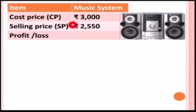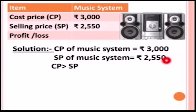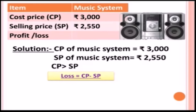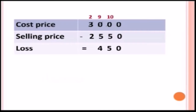Next item is a music system. The cost price of the music system is rupees three thousand and the selling price is rupees two thousand five hundred fifty. We have to calculate the profit or loss. The cost price is greater than the selling price, so there is a loss. Loss equals CP minus SP.